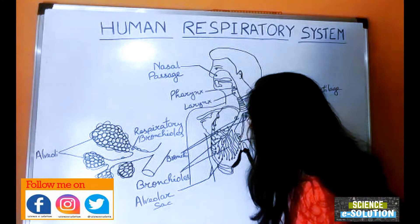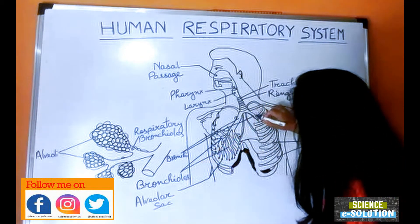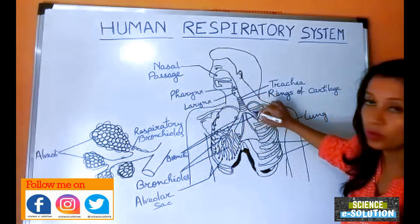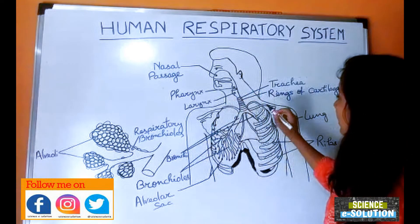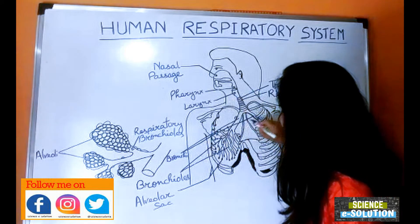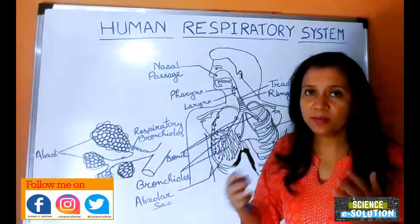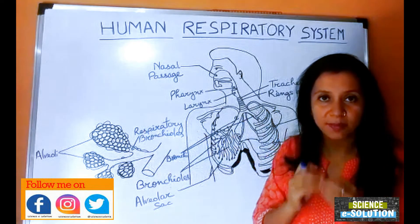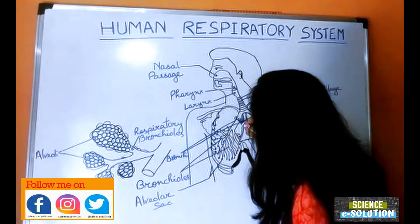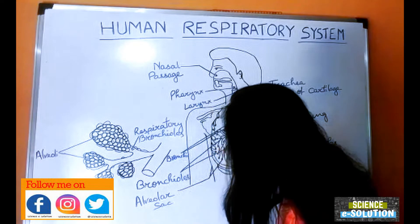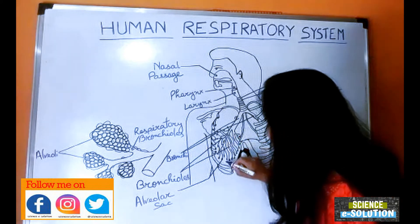From the trachea, air enters into the bronchi. The trachea divides into two bronchi — one entering into the right lung and another entering into the left lung. Inside the lungs, each bronchus divides further into many branches, just like a main branch of a plant divides into smaller branches. These smaller branches are known as bronchioles.